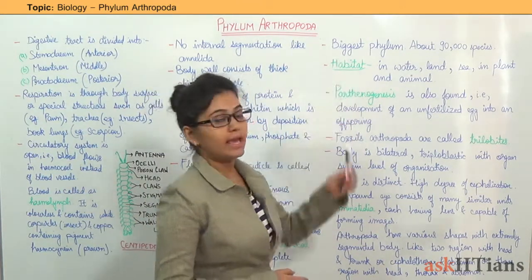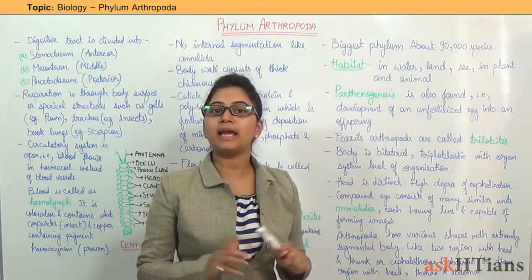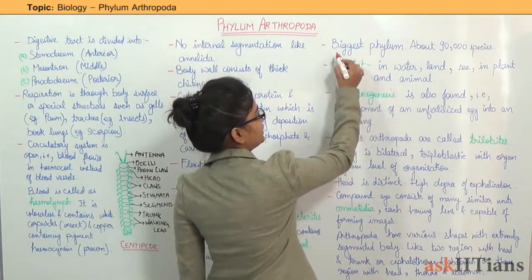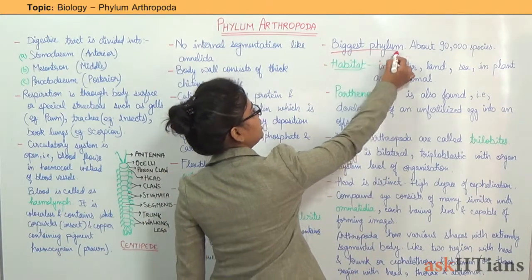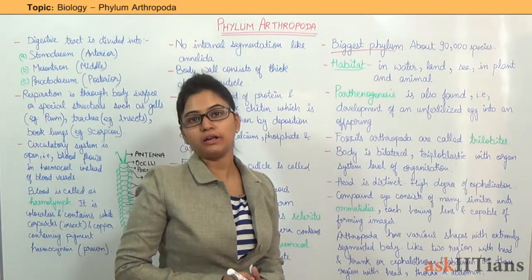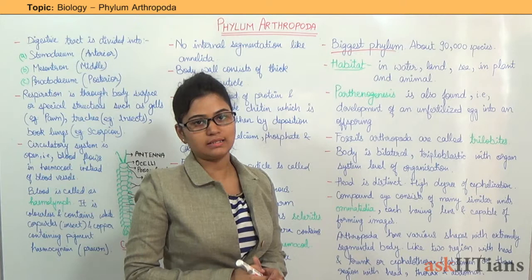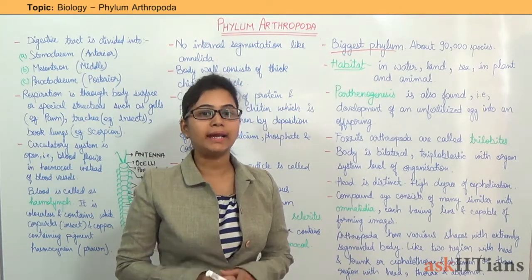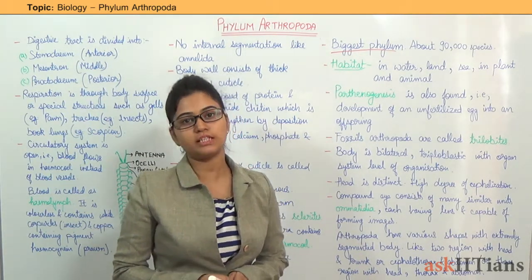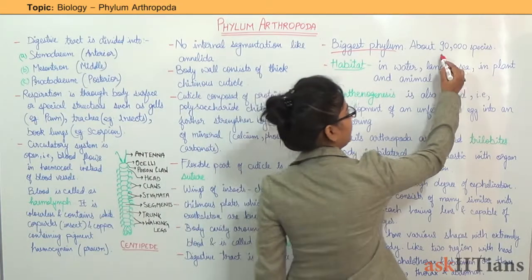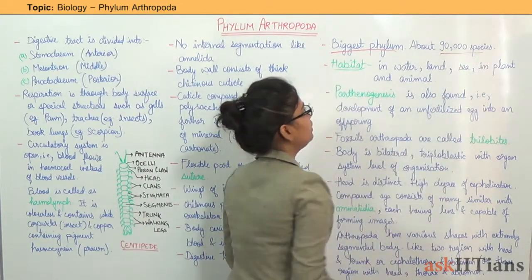First, Arthropoda is the biggest phyla and it contains around 90,000 species. This is important — remember this.